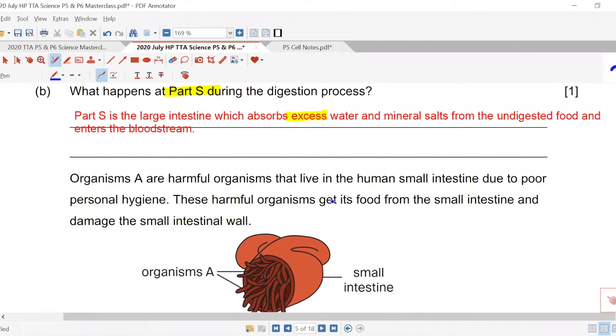Next one, we have organisms. A are harmful organisms that live in the human small intestine with the poor person's hygiene. So I've seen this online before in YouTube videos. You can go and search about it. They call it the tapeworm. If you have ever heard of it, tapeworm.